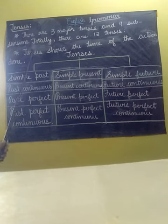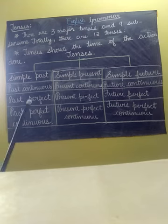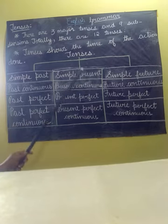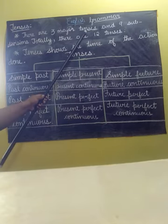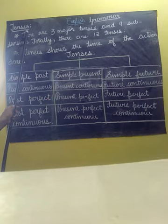So what is tense first? Tense shows the time of the action done. That means it describes when the verb is there, what is the condition of the verb, the timing of the verb. So verb is nothing but an action verb. So tenses show the time of the action done, means it describes about the timing of the verb. Here there are three major tenses. Hope you understood what is the tense. Now tenses means it is time.